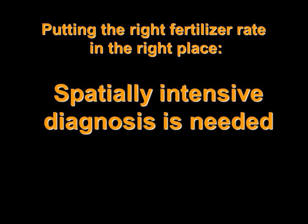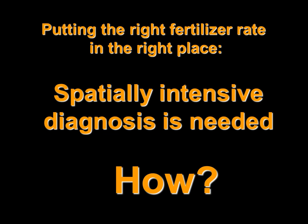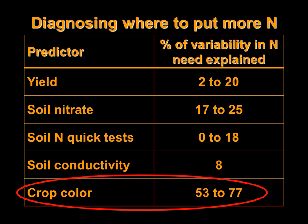If you're going to put the right rate in the right place, you need some kind of spatially intensive diagnosis. This is what I had in mind when I started working on remote sensing, and I think it works, but there are some nuances. In my research on diagnosing where to put more nitrogen, yield has had some predictive ability, but it's between 2 and 20 percent of the variability in nitrogen need. So in general, where there's more yield, more nitrogen was needed, but it really didn't do a very good job — maximum 20 percent of the variability was explained.